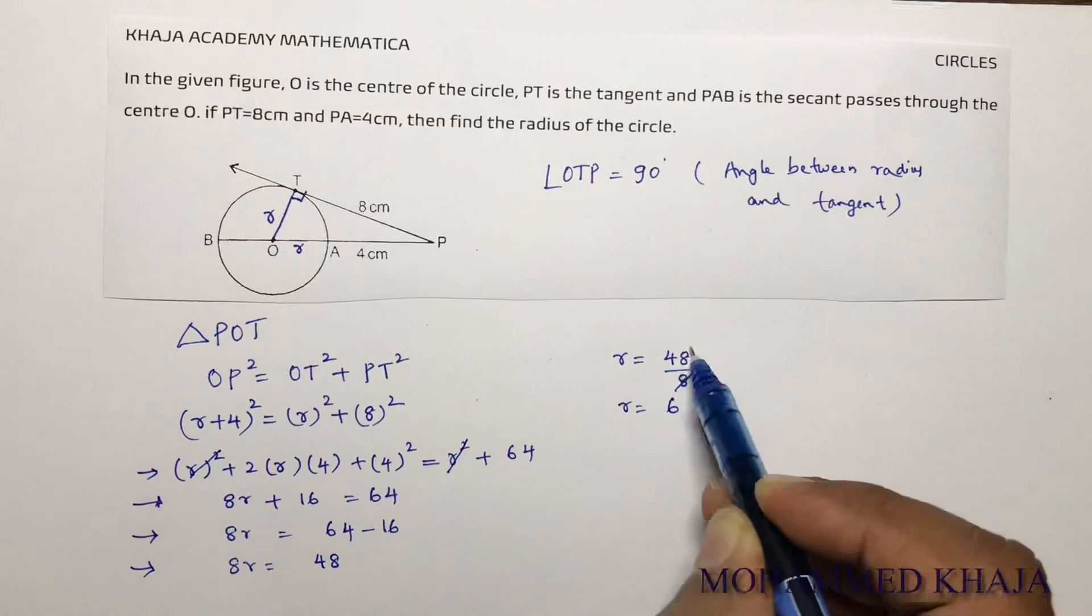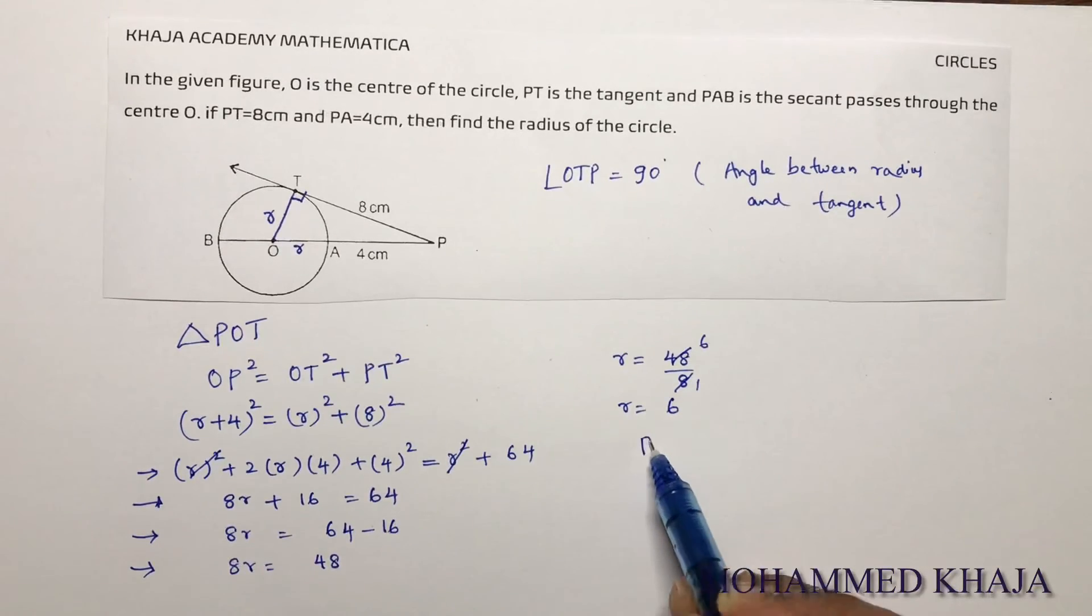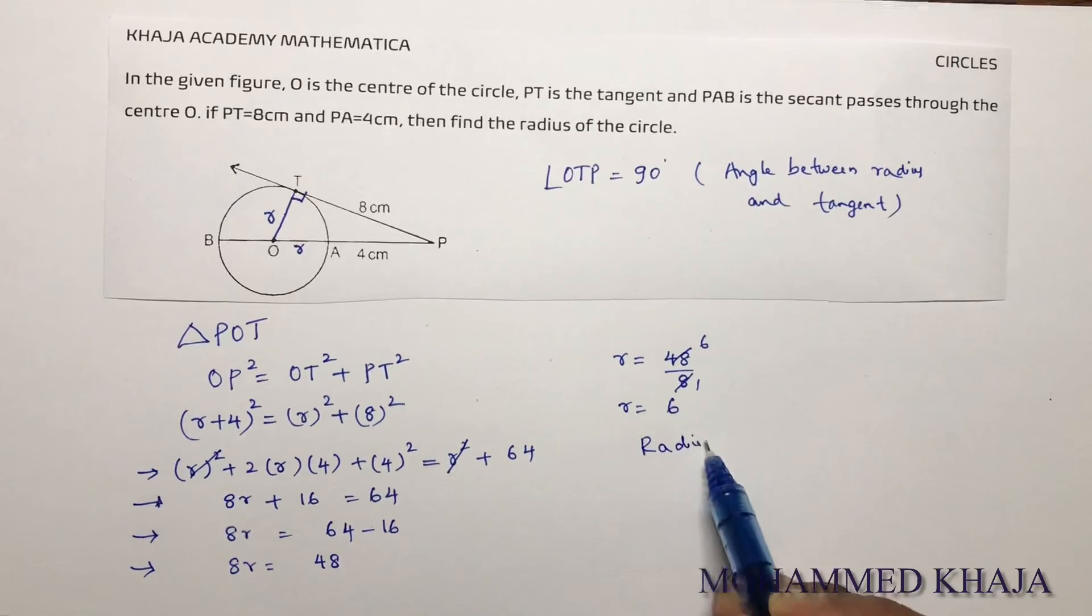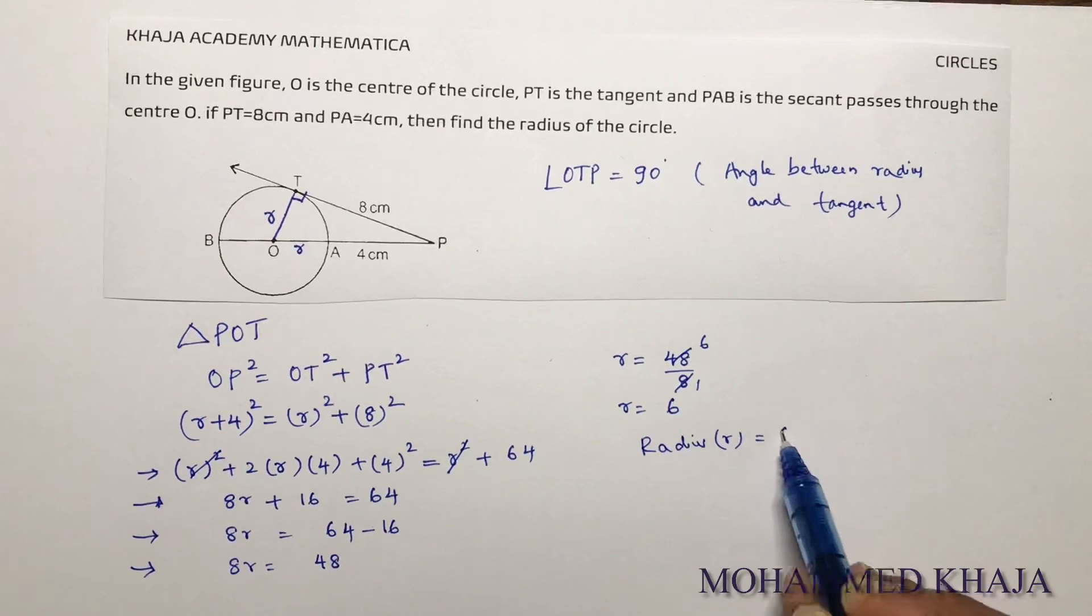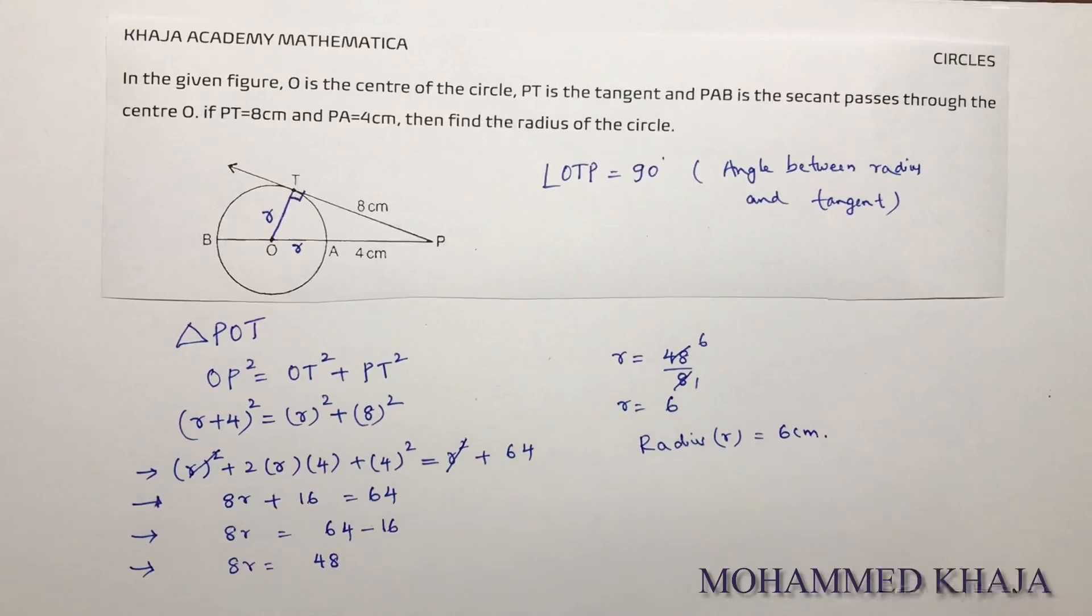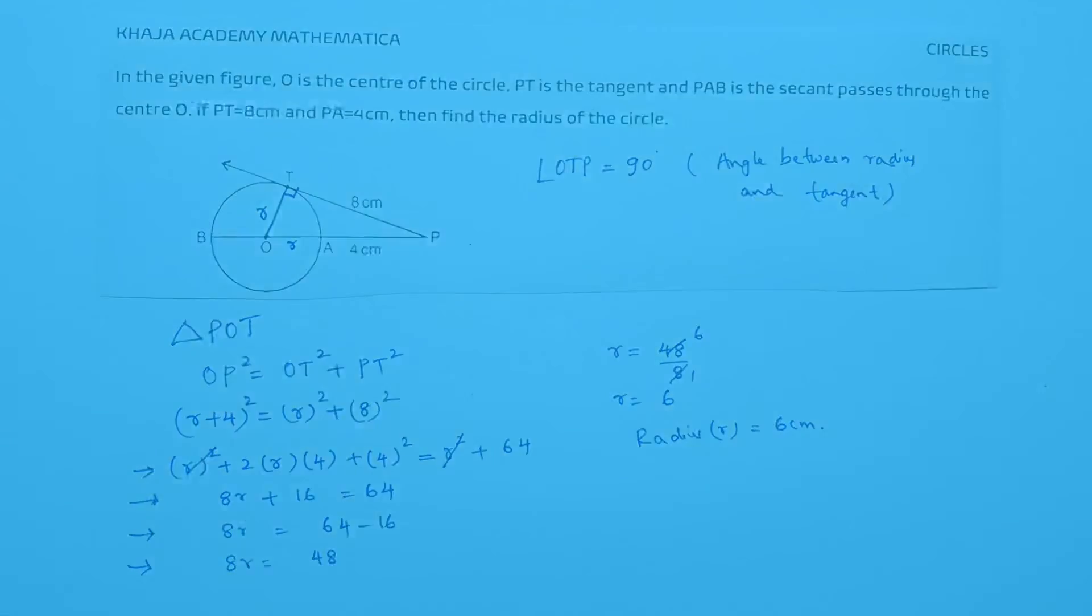8 times 6 is 48. So the radius is 6 centimeters.